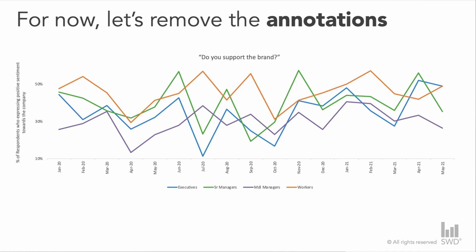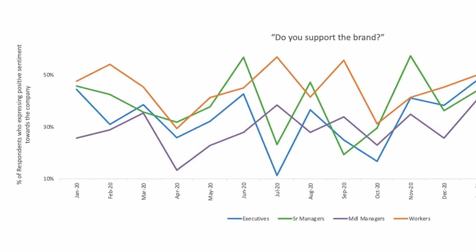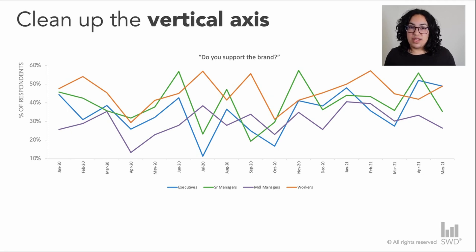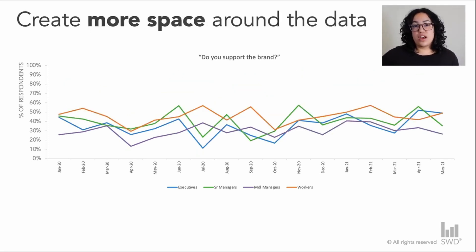I'm going to make a handful of changes to clean things up, starting by stripping away unnecessary elements like the border and grid lines, and removing the colorful annotations for now — we'll add those back later. Bringing attention to the vertical axis, things look a little off. I want to add an axis line and tick marks to make the axis range clear. The axis title is also super tiny and hard to read, so I'll make that font bigger and the title pithier. I'm also going to adjust the vertical axis range from 10–60% to 0–100%, which gives much more space around the data.